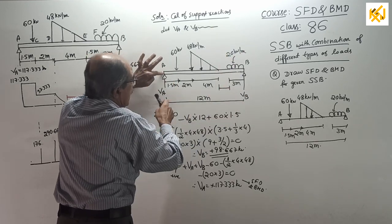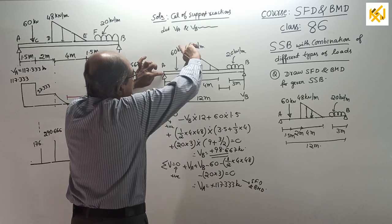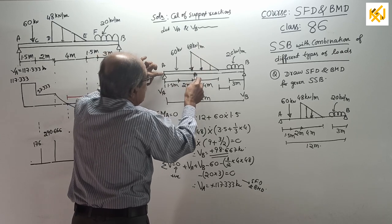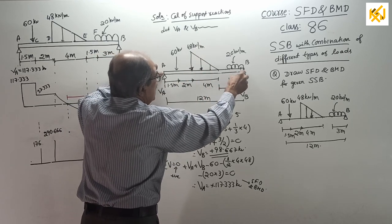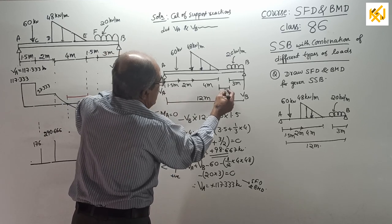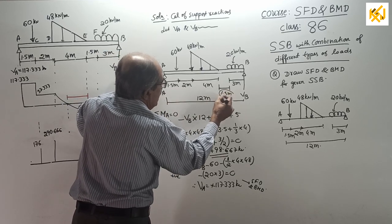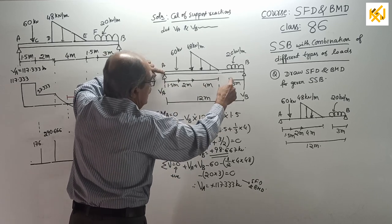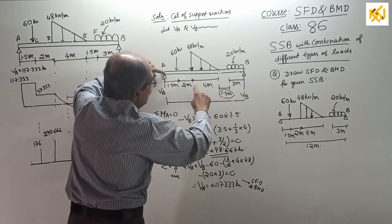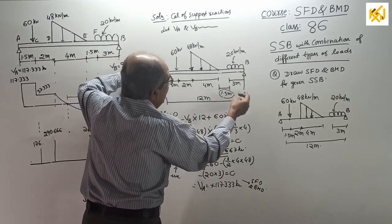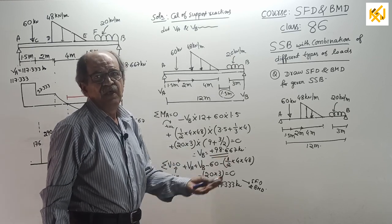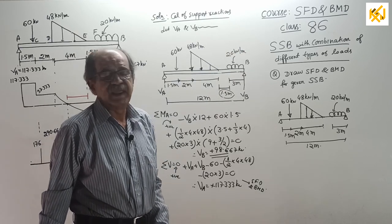First, Sigma M about A equal to zero: minus VB into 12 plus 60 into 1.5 plus half into 4 into 48 (the total load) into 3.5 plus 1 third of 4 plus 20 into 3 into, from 12 subtract 3 by 2. You get VB. Sigma V = 0, so you get the value of VA.